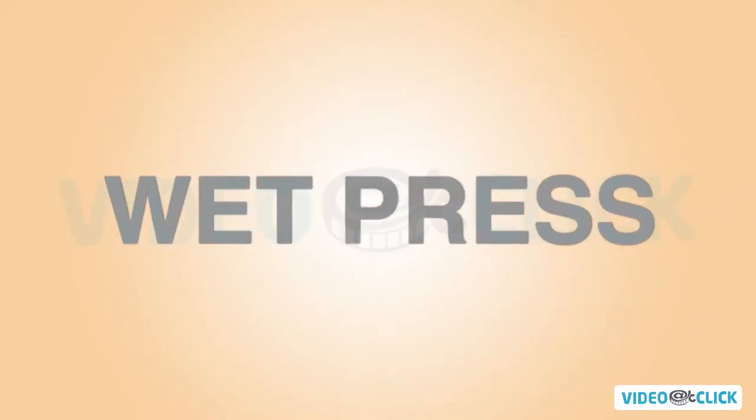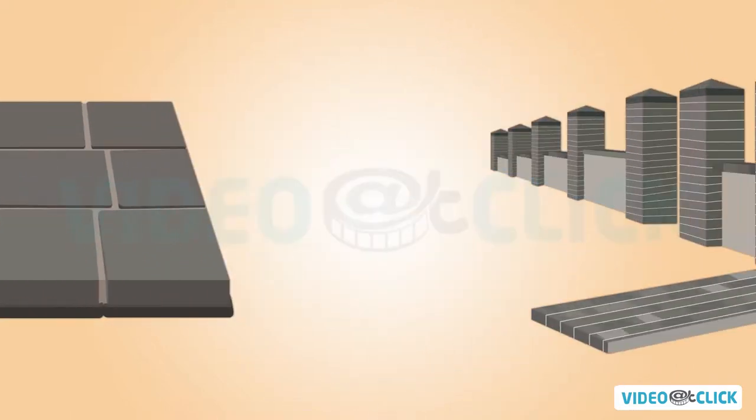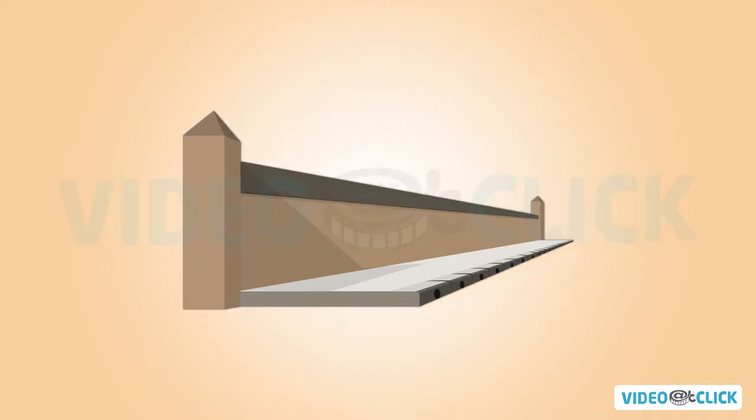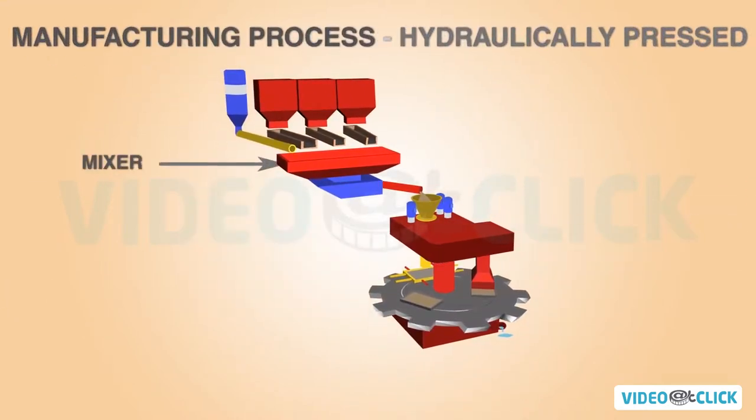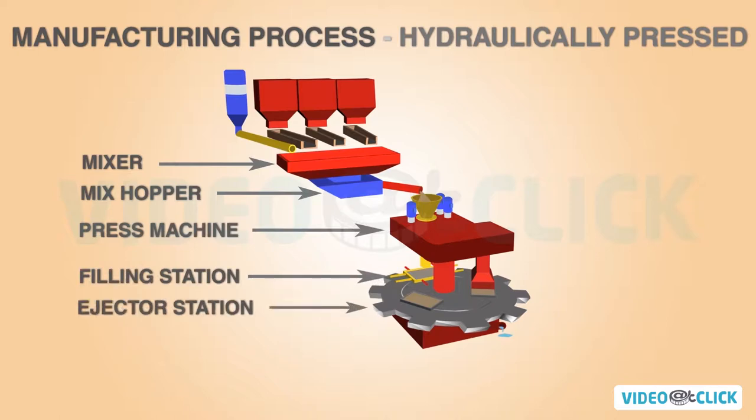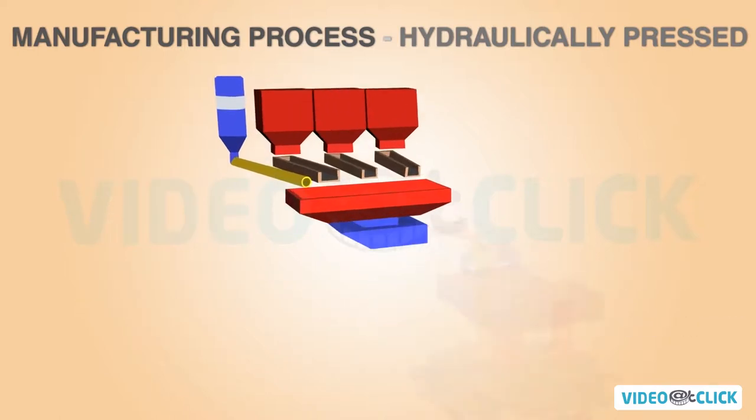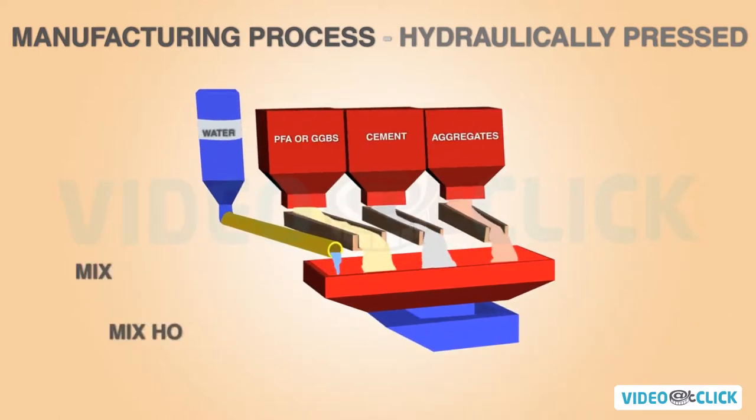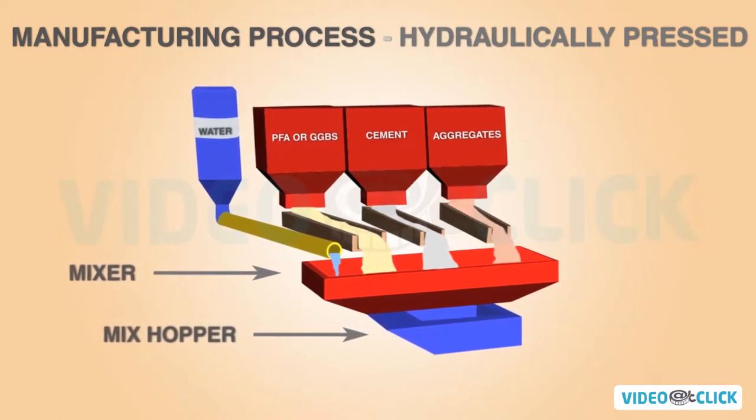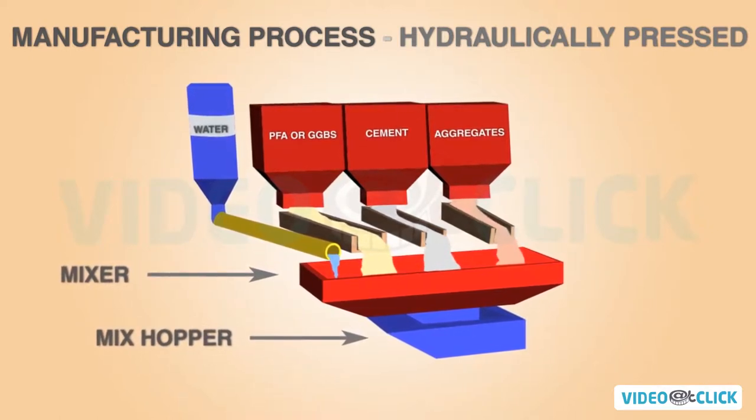The wet pressing process is used for creating paving, walling, kerbs, and some drainage products. Batching is the automatic weighing up of a variety of aggregates to an exact mix design so that approximately one tonne of the correct materials is supplied to the mixer.